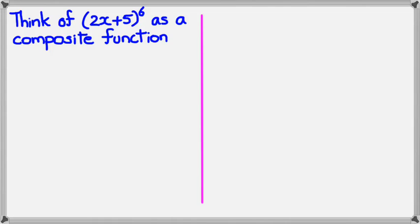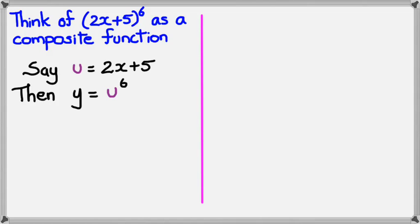So the best way to do this is to think of 2x plus 5 to the power of 6 as a composite function. Now if you don't know what a composite function means, it just means it's a function within a function. I'll show you as an example. Let's say u is equal to 2x plus 5. Then we can say y is equal to u to the power of 6.